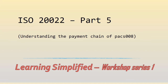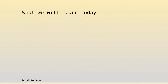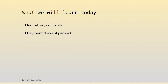Welcome back to part 5 of this series on ISO 20022. In this session we are going to understand the payment chain of a PAX 008 message. Today we will first revisit key concepts, then understand the payment flows of a PAX 008 message and compare it with an MT message which we are more familiar with, and finally look at the message structure.